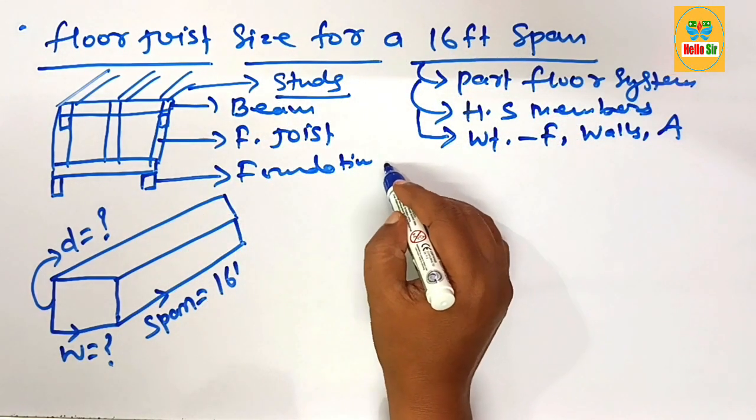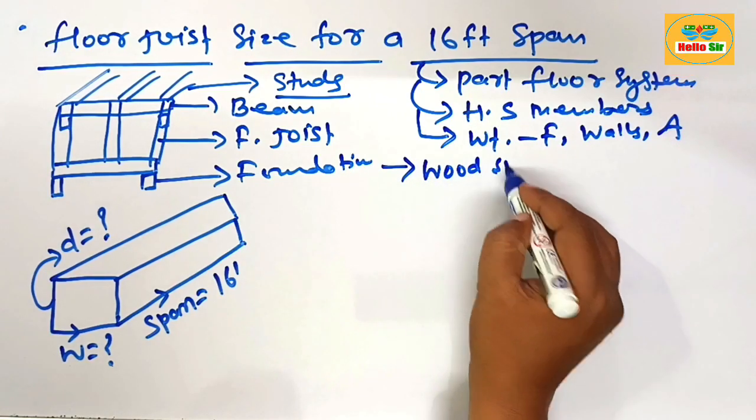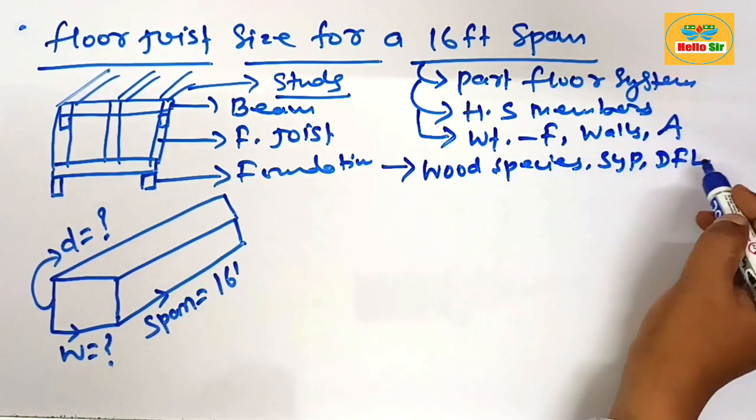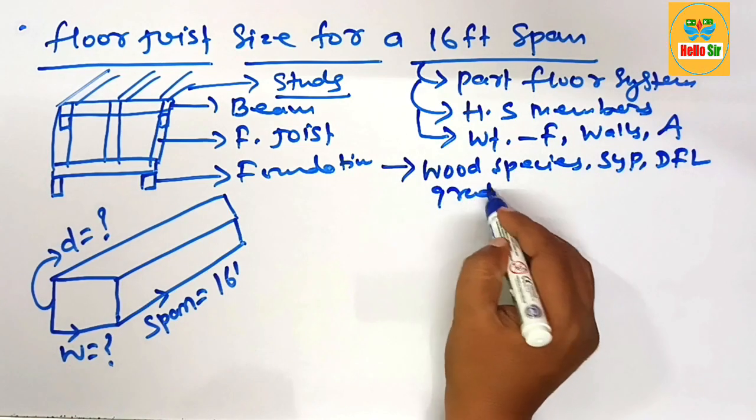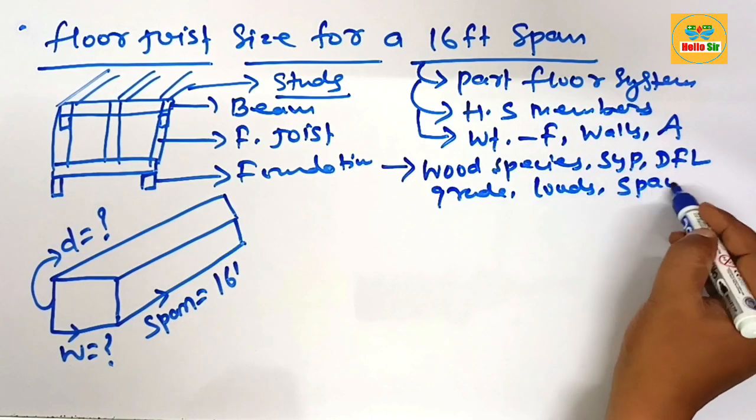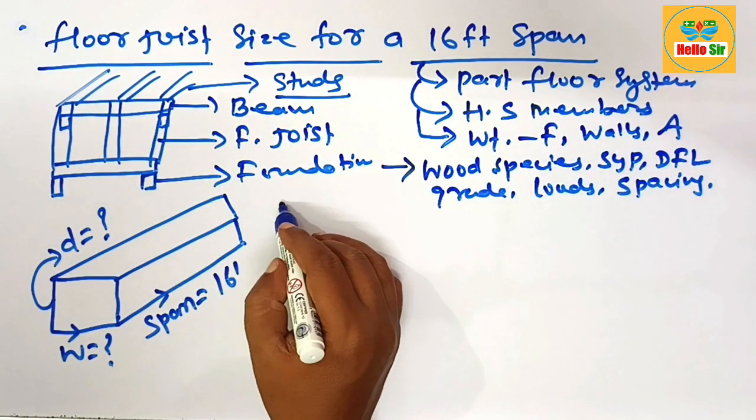You know that the span of floor joist depends on many factors like the wood species (such as SYP, DFL, hemlock, etc.), the grade of wood, the load condition, and spacing between floor joists.